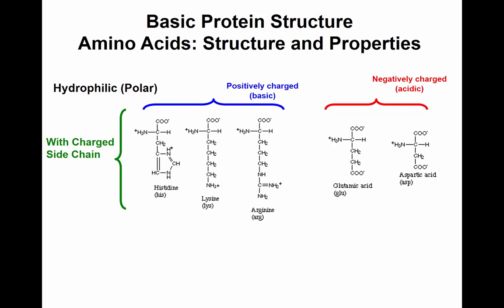Glutamic acid and aspartic acid are the acidic amino acids. Instead of having an extra amine group, they have an additional carboxyl group in their R chain. At neutral pH, these charges cancel and you end up with a negative charge. So glutamic acid and aspartic acid are negatively charged at neutral pH.